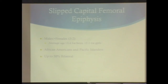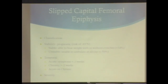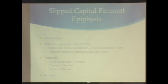SCFE occurs slightly more in males, at a slightly older age. African-Americans and Pacific Islanders are more commonly affected. It can present bilaterally. Classification is based on stability — stable means they're able to bear weight with or without crutches. Stability is prognostic of avascular necrosis: low chance if stable; if unstable and unable to ambulate at all, risk is up to 50 percent.